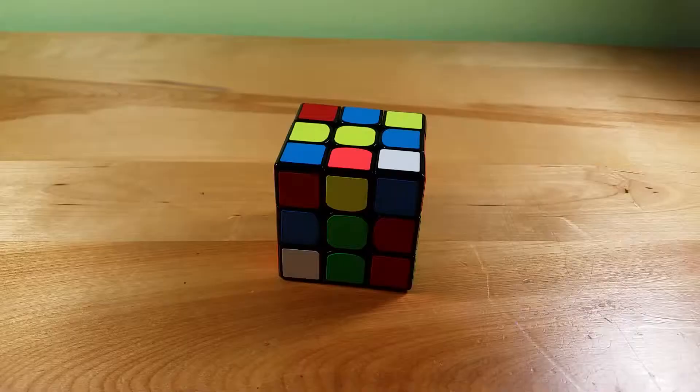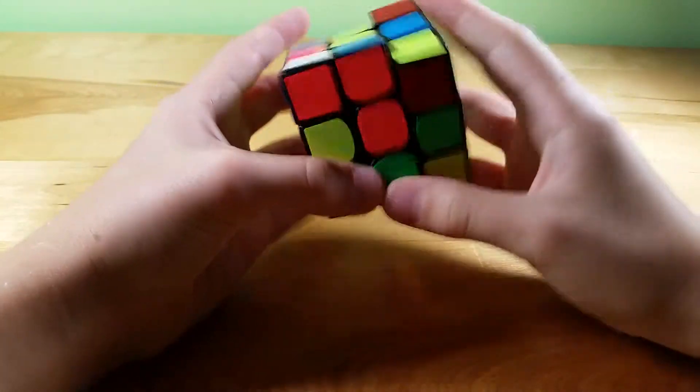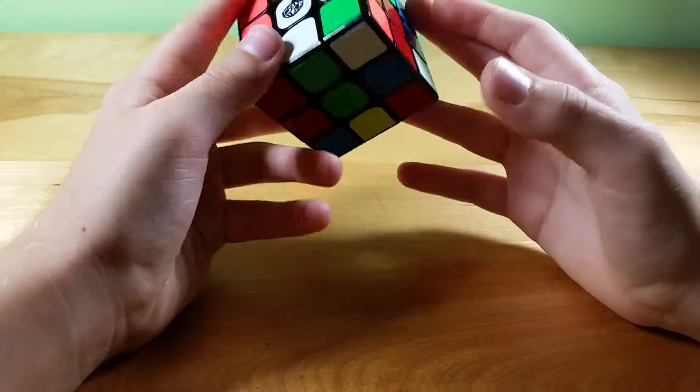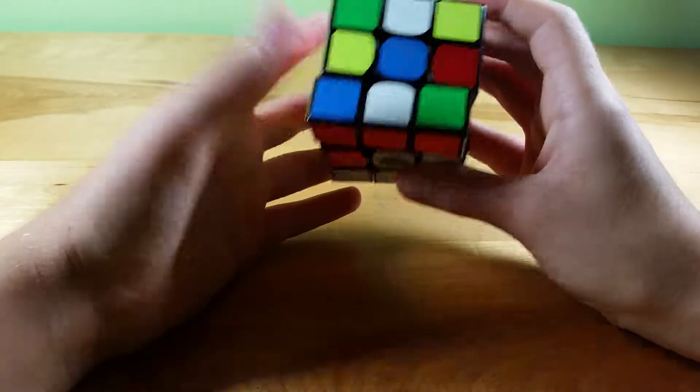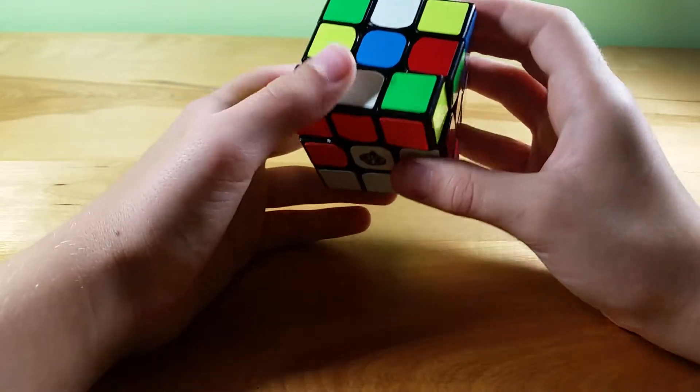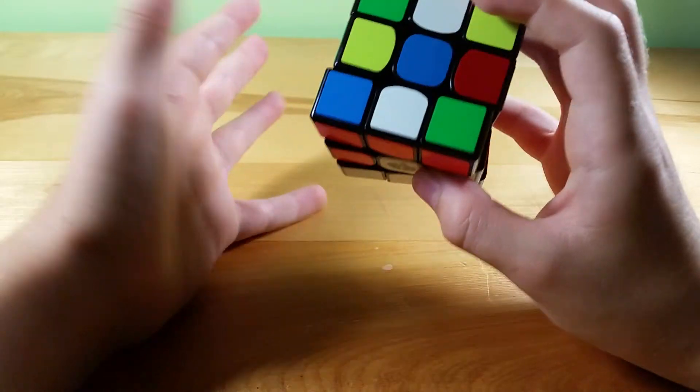Okay so here we go, first scramble. So we're using beginner's method and basically this isn't completely beginner's method. I'll still make the cross the same way I normally would except for F2L is where the main difference is, and then OLL and PLL also.